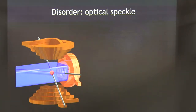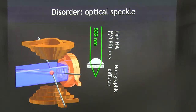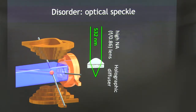Where things do get different in our experiments is when we add disorder in. To generate the disorder in these experiments, we use optical speckle. We take 532 nanometer light — which is the color of this laser beam — we pass it through a high numerical aperture lens and through a holographic diffuser. I actually have a piece of that here; it just looks like a dirty piece of plastic. When the light passes through that thing, the diffuser scatters the light through a range of angles, only about a half degree — that's the reason we use this very small angle diffuser. That light is then focused by the lens into the focal plane of that optic.